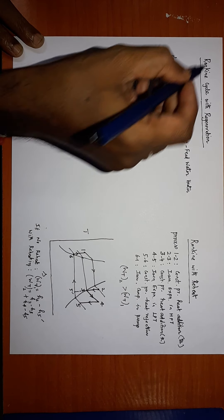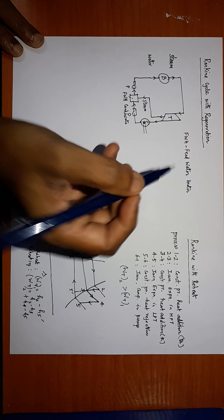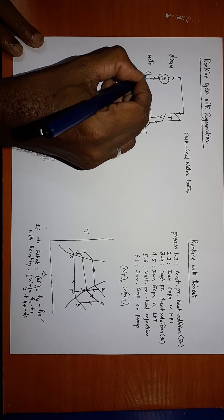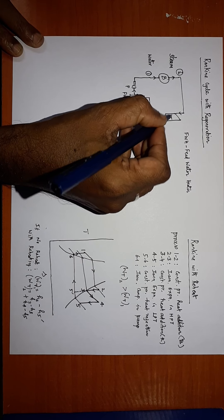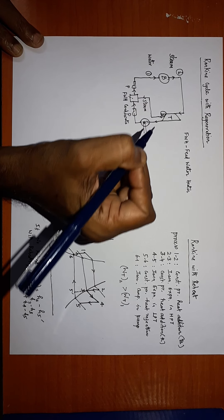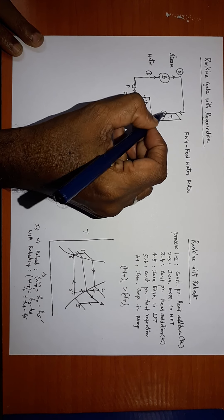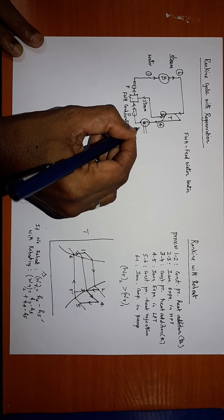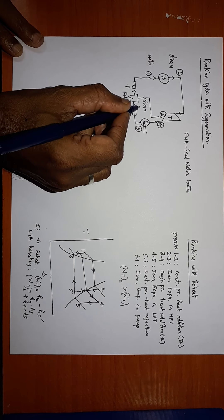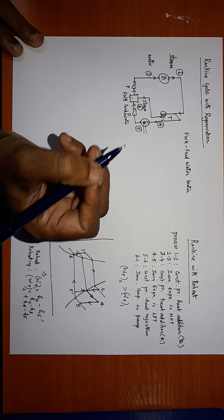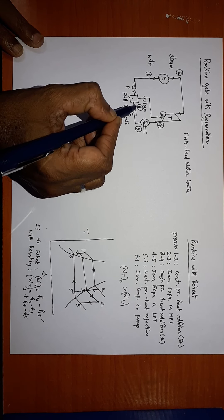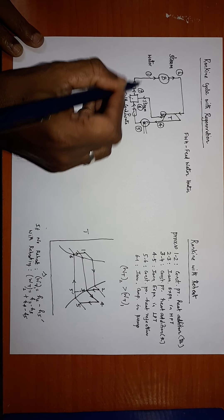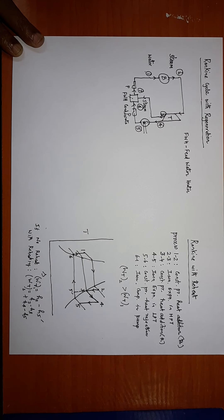Now let me draw the TS diagram for the regeneration cycle. I will assign the state points: state 1 enters the boiler as water and leaves at state 2 as steam. State 3 is the point of partial expansion where steam is tapped. State 4 is after complete expansion. State 5 is after condensation. State 6 is after the first pump. State 6 mixes with the steam at state 3 in the feed water heater to give state 7 at the outlet. Then state 7 is pumped back to state 1.